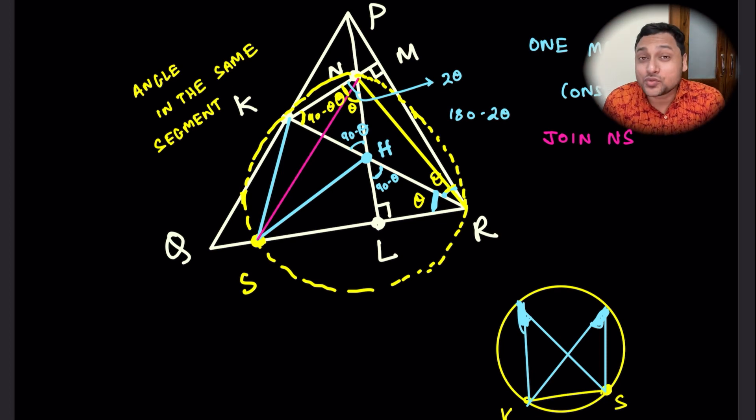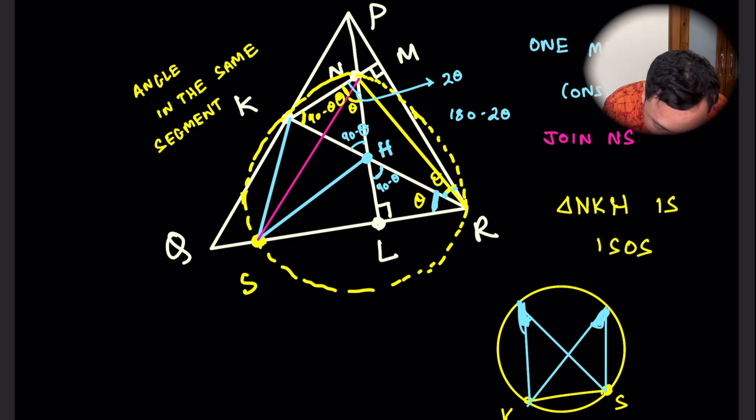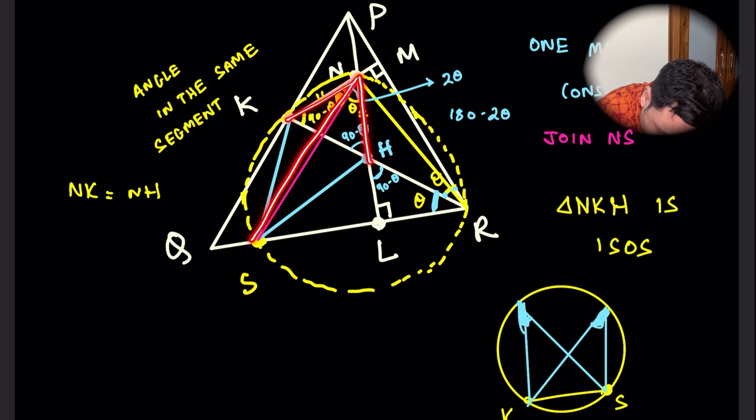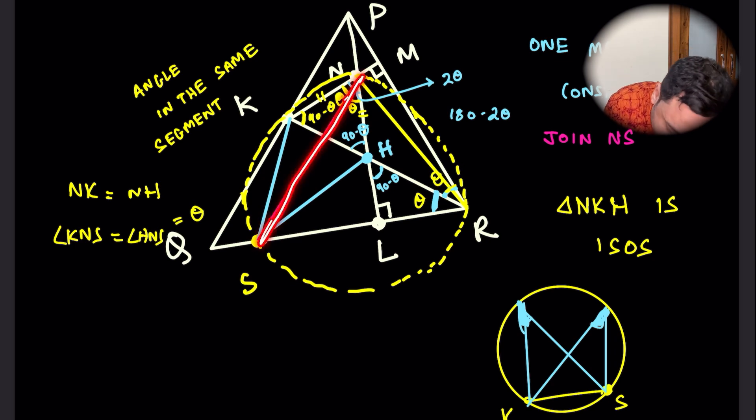Let's see which two triangles are congruent now. The first thing you have to realize is that here, in this picture, NKH is isosceles. Why? Because we have already shown that the base angles are 90 minus theta. The two base angles are 90 minus theta. So we know then that NK is equal to NH. And we have already shown that KNS and HNS are both theta. Both of these angles are theta.